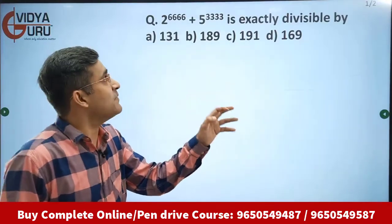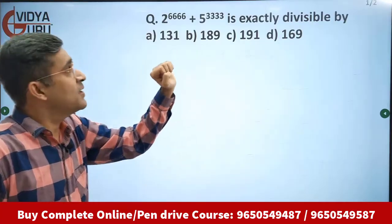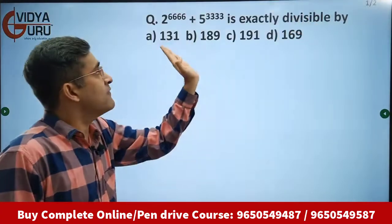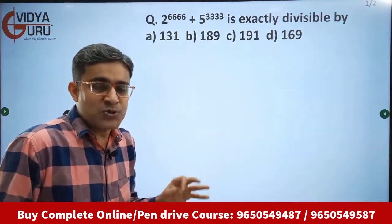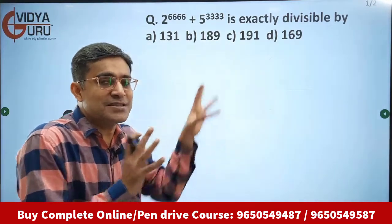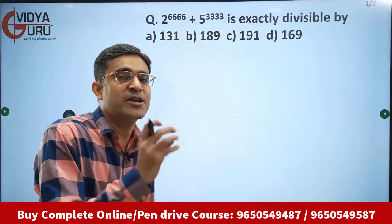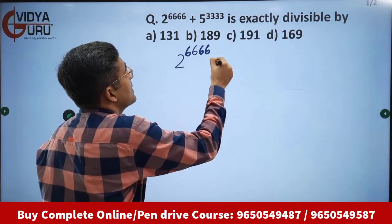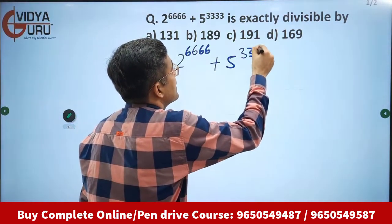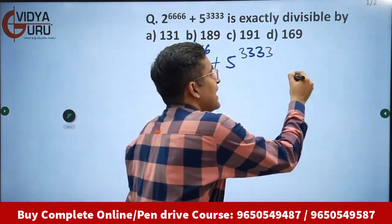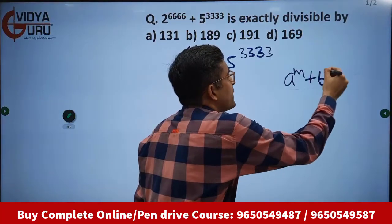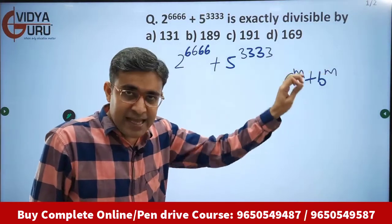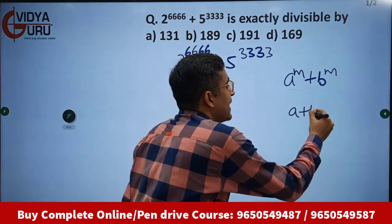Let's solve the question on your screen: two raised to power four times six plus five raised to power four times three — which of the following is it exactly divisible by? An interesting concept will be learned today. Now, a raised to power m plus b raised to power m — an expression of this form is completely divisible by a plus b.